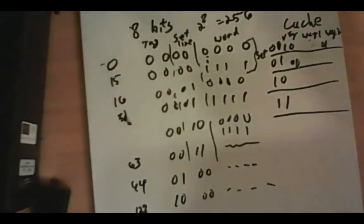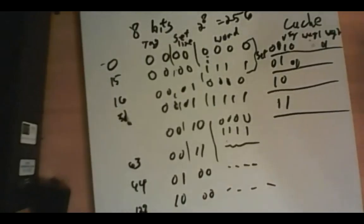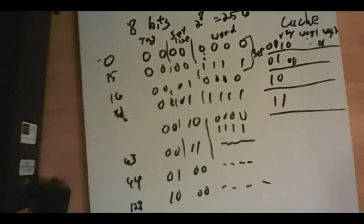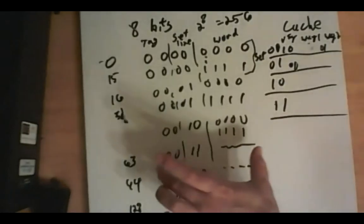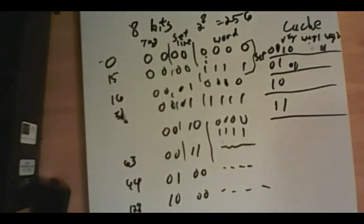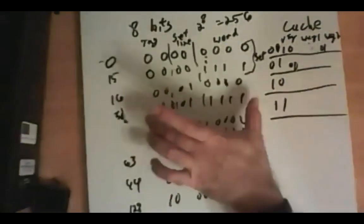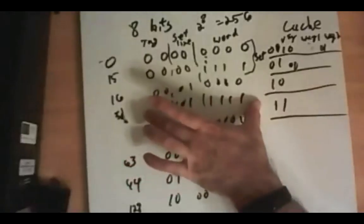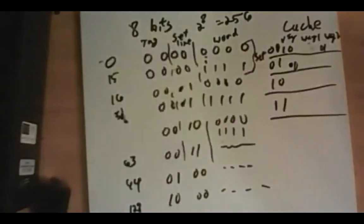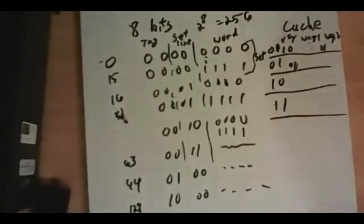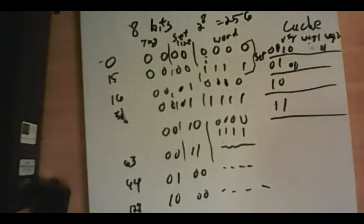This same idea is used in many places — whenever you're doing paging or moving blocks of data in and out, you often break up your address space so the pieces mean different things. The same concept applies to figuring out whether a page number is in virtual memory or whether a particular set and tag are in your cache.